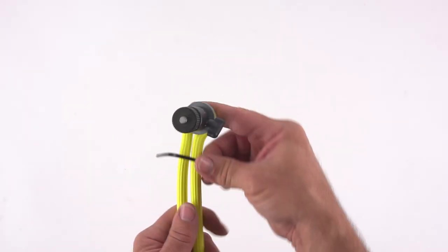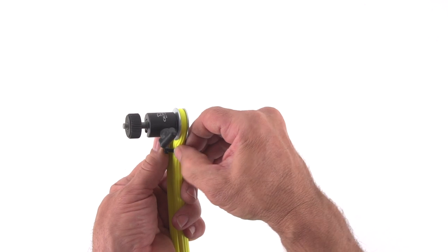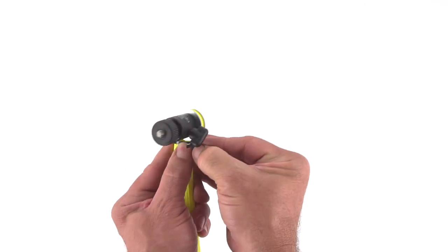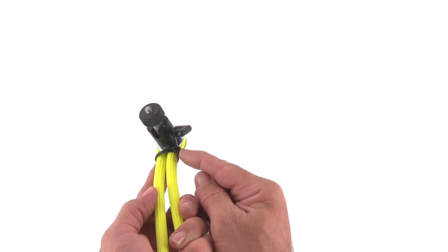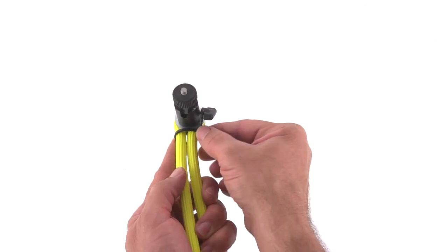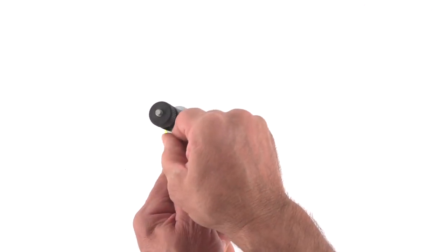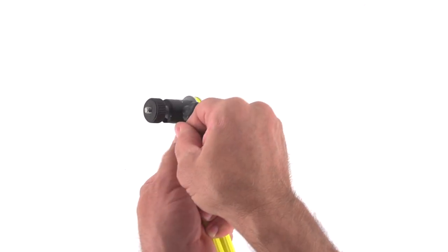Now the last piece you need is the zip tie from the packaging. And you don't absolutely have to use this. I just find that it kind of tidies it up a little bit, and it keeps the two legs from spreading apart and possibly having your camera fall out.